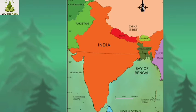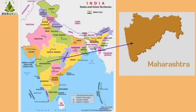But before that, let's learn about our country India. India is a huge country. India is divided into smaller divisions called states and union territories. At present there are 28 states and 8 union territories in our country India. We live in the state of Maharashtra. This is the map of our state Maharashtra. So let's see some neighboring states of Maharashtra.